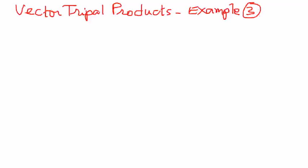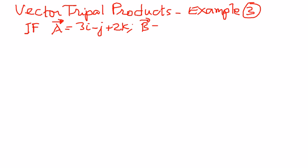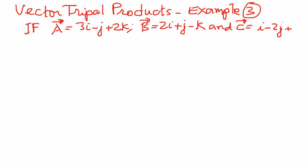Welcome to my presentation. In this presentation, let us look at another property and try to show that the left-hand side of the expression is equal to the right-hand side. Let us take an example: if vector a is 3i minus j plus 2k, and if vector b is 2i plus j minus k, and if there is another vector c with components i minus 2j plus 2k, and another vector d with components i plus j plus k, then we want to show one of the properties of vector triple products.